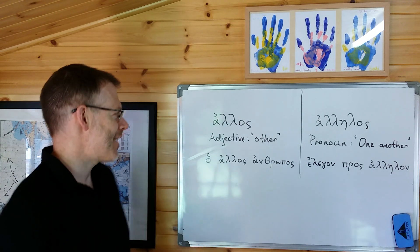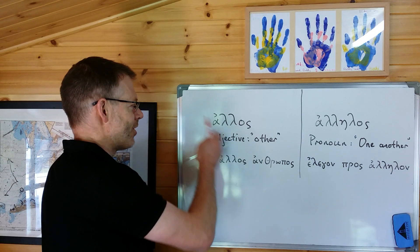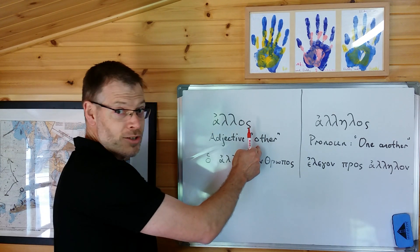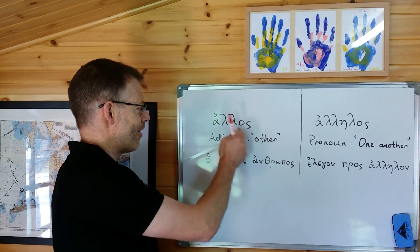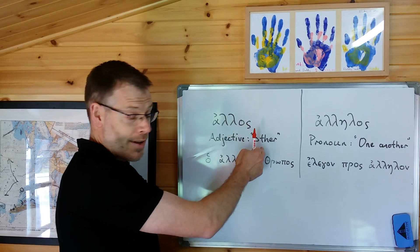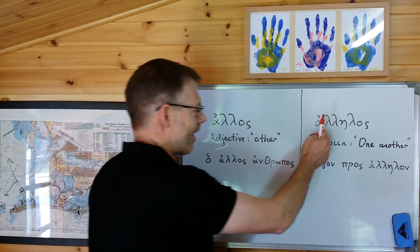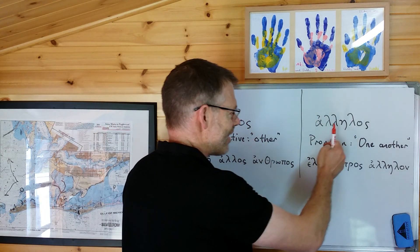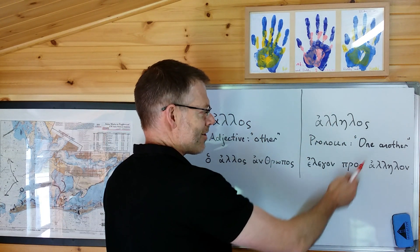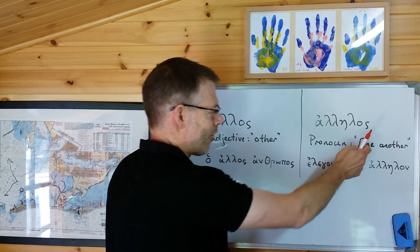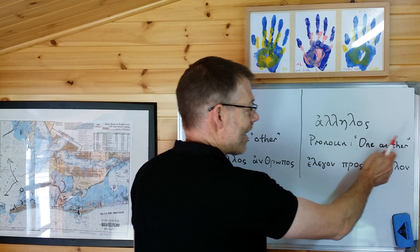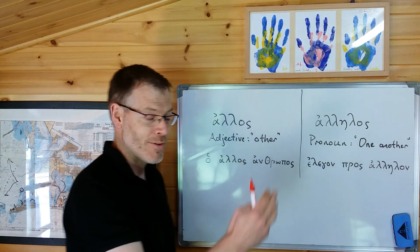The best way to think about it: short, two syllables — alos — 'other'; longer, three syllables — alelos — 'one another,' three syllables. You use them pretty much just how you would use them in English.